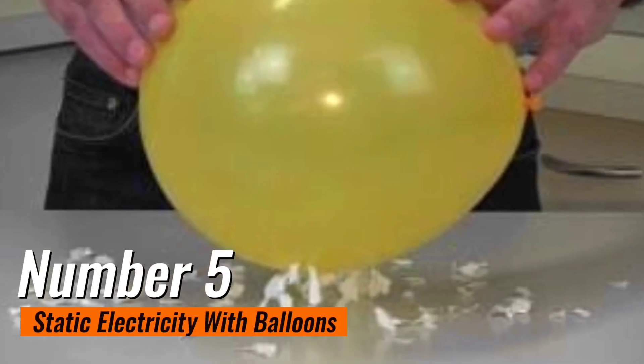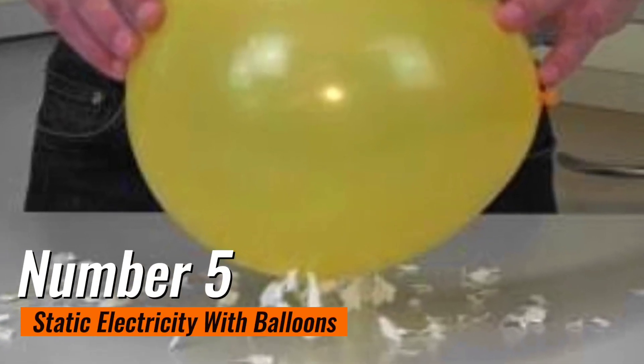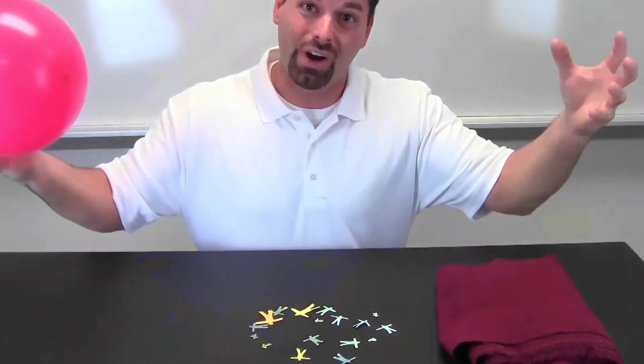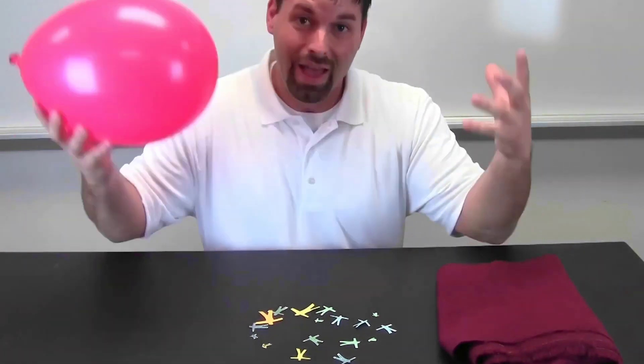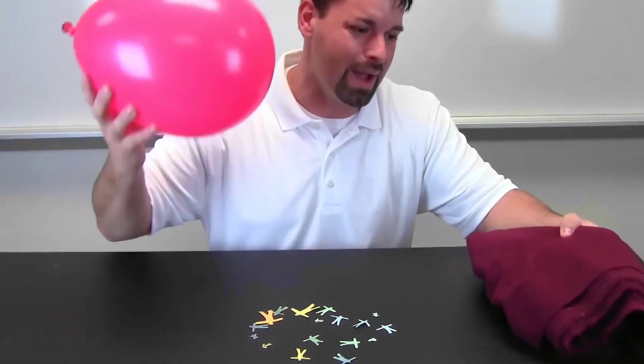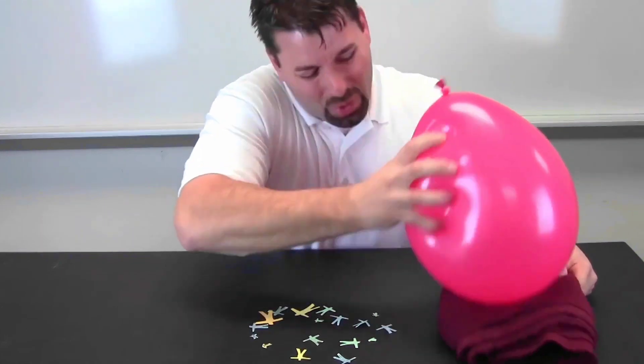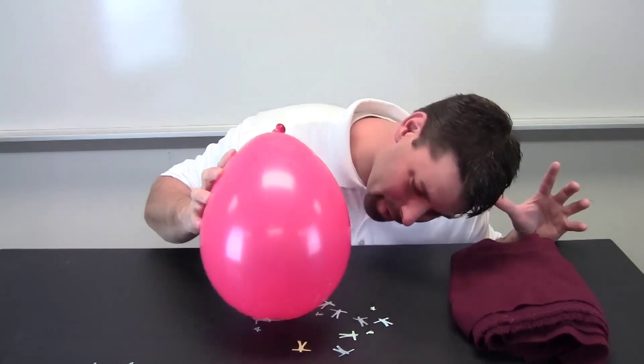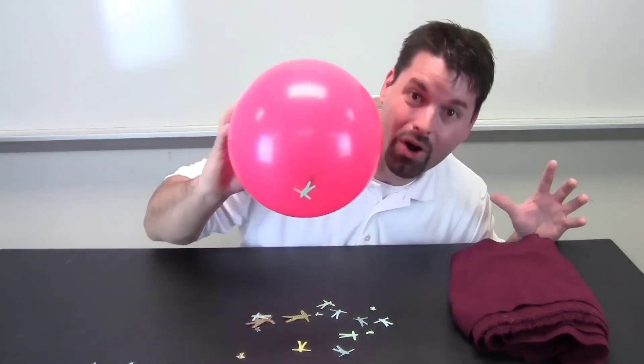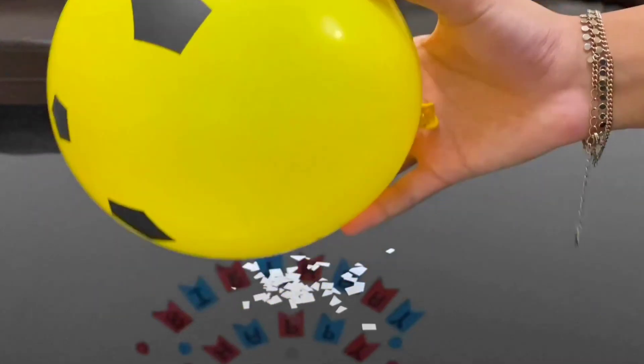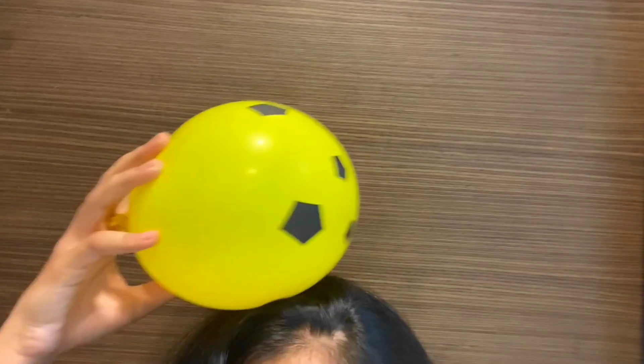Number 5. Static electricity with balloons. The static electricity with balloons experiment is an electrifying and captivating science activity that demonstrates the principles of static charge. To conduct this experiment, you will need a balloon and a piece of woolen cloth or your hair. First, inflate the balloon and tie it off. Next, rub the inflated balloon vigorously against the woolen cloth or your hair for about 10 to 15 seconds. This action transfers electrons from the cloth or hair to the balloon, creating a static charge.